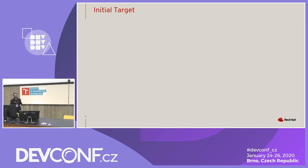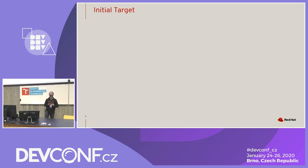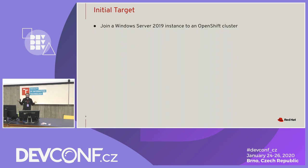Our initial target was to start very simple — just the basics, just enough to get our feet wet. The first thing we wanted to do is take a Windows server instance running somewhere and add it to an OpenShift cluster.